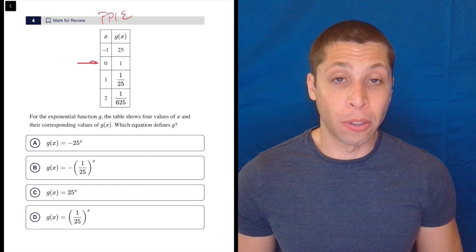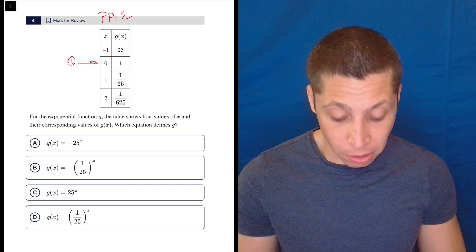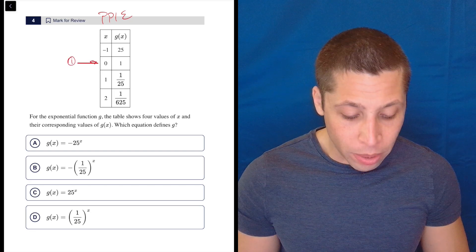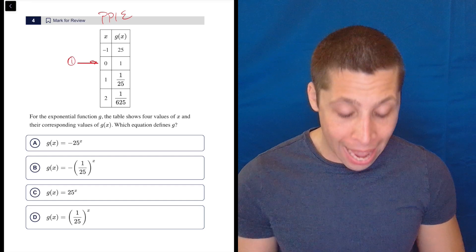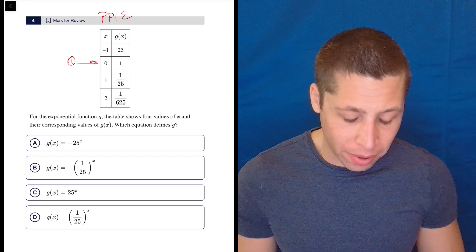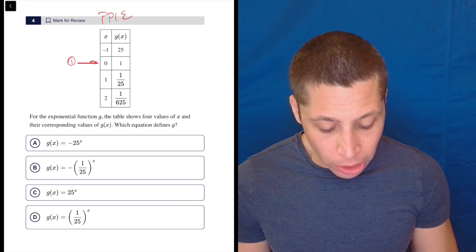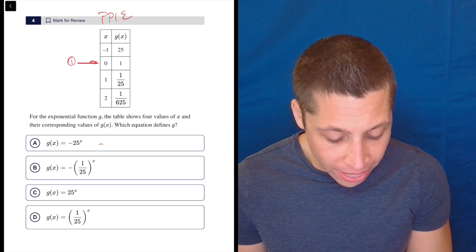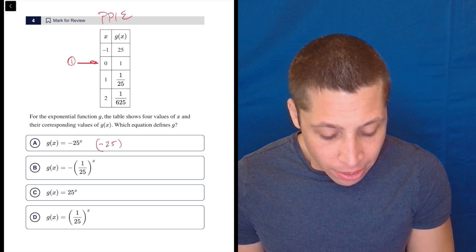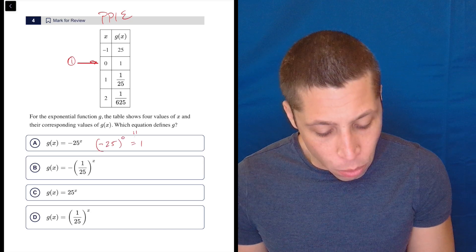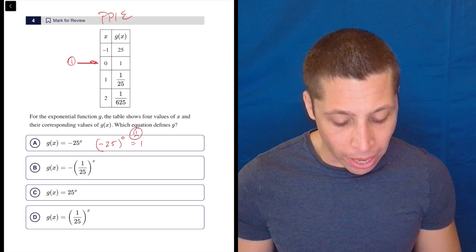Let's start with zero, one, right? That's pretty lazy because zero is great. Now if we put that into each of these, we're looking to get one out and right away with choice A, we've got a little bit of an issue because a lot of you are going to think that this is negative 25 to the zero, which makes this one, but no, that's not quite right.